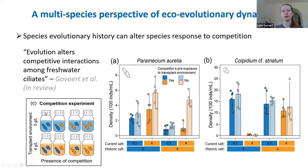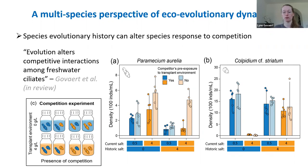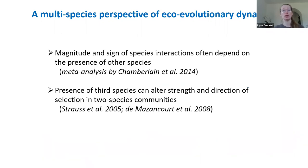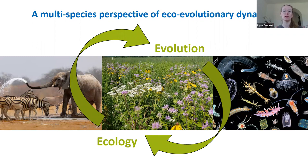My work also shows that a species' evolutionary history can alter its responses to competition. Using two freshwater ciliate species evolved in low versus high salinity, placed in a competition experiment with the same or different evolutionary histories, I found that when your competitor was naive to the environment you were competing in, this gave the focal species a competitive advantage. Other studies have also demonstrated that the magnitude and sign of species interactions often depends on the presence of a third species, clearly indicating we need to include more complex communities.